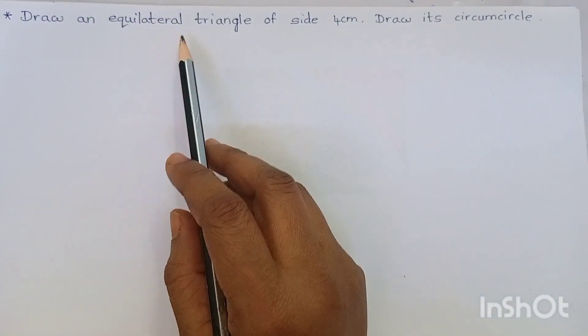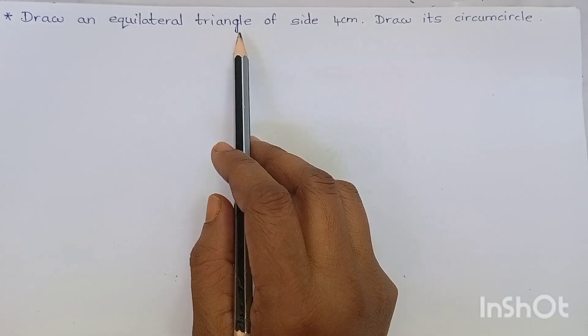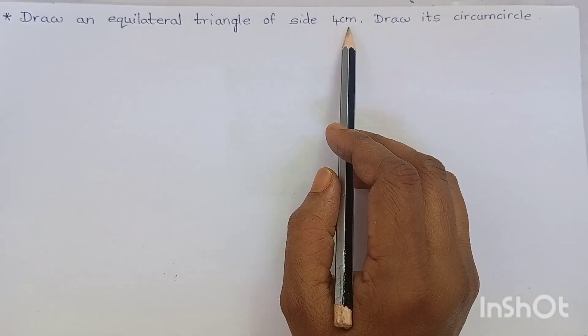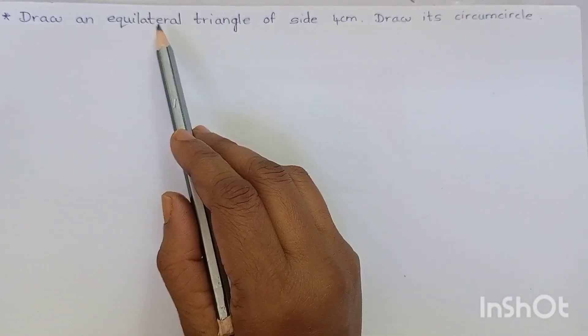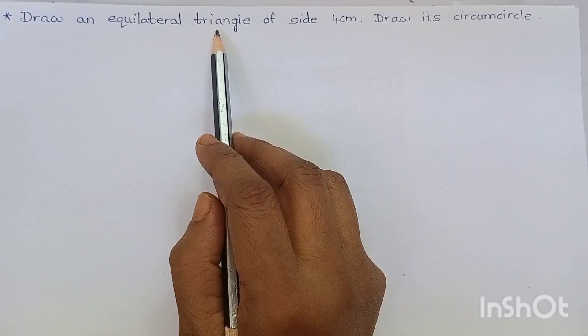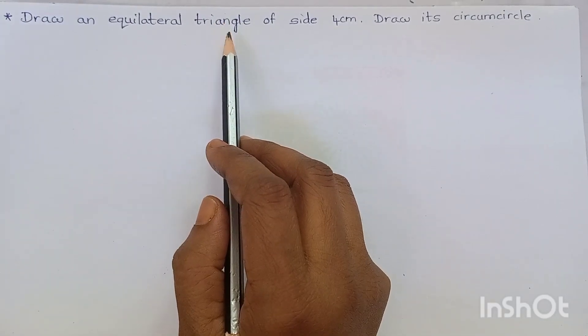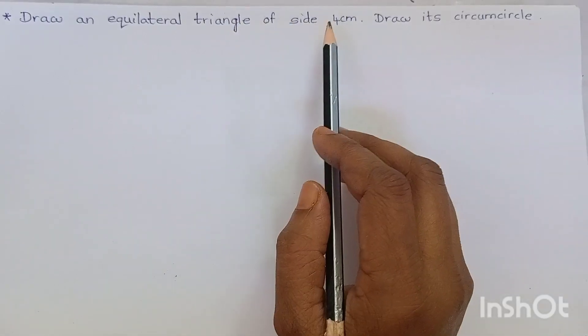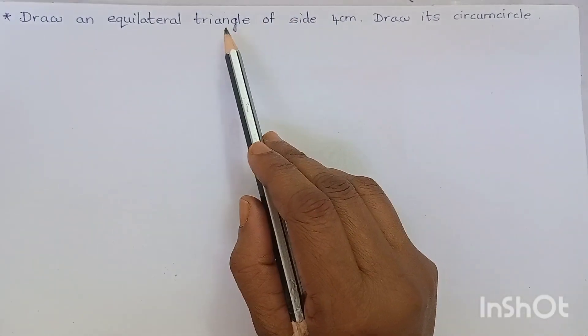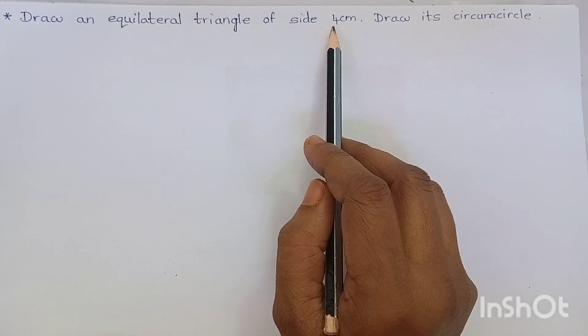First, let us draw an equilateral triangle of side 4 cm. We know that equilateral triangle means all the sides are equal. Here they have given to draw an equilateral triangle of 4 cm.